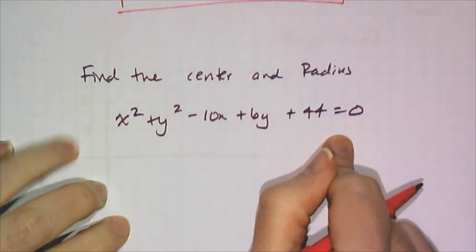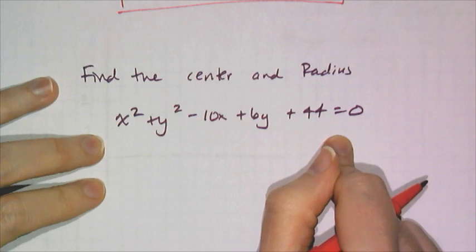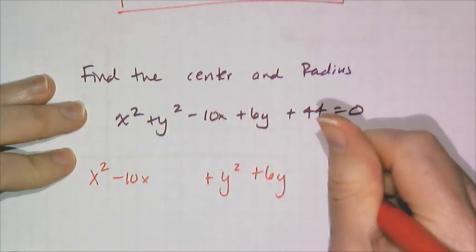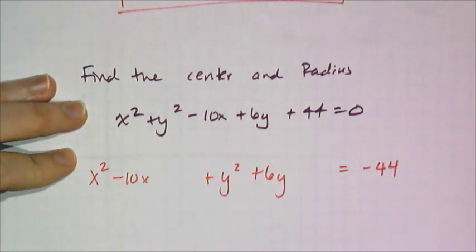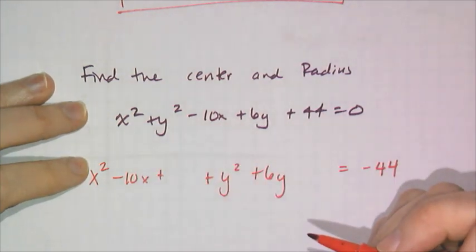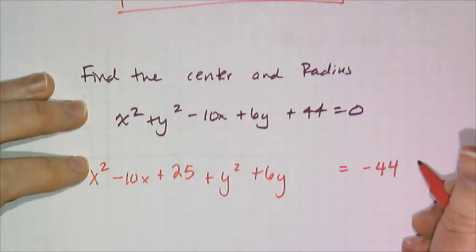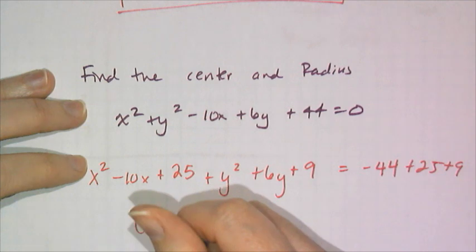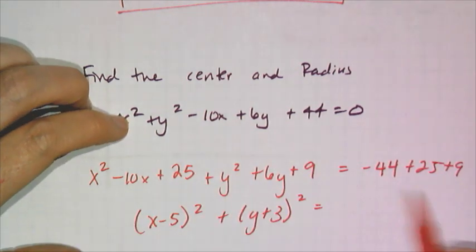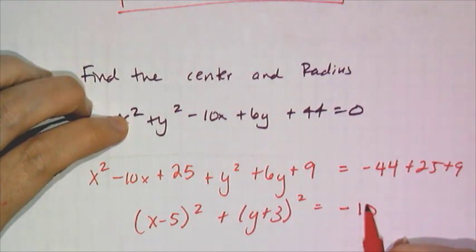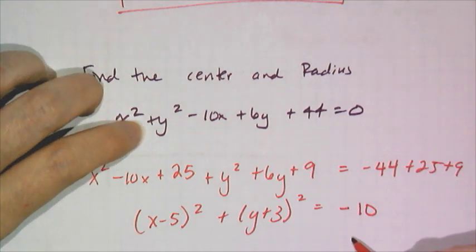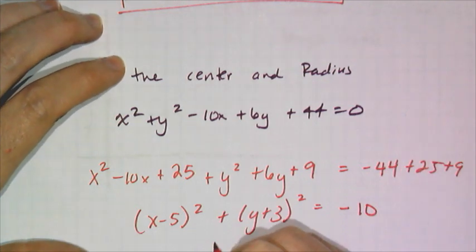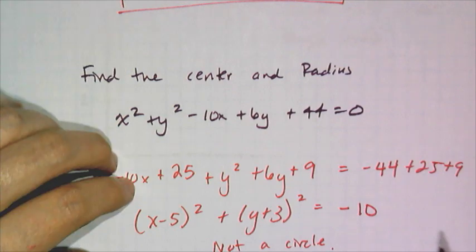Now we're going to do the special case example. Same thing happens as I did with the last example. I have to complete the square twice. I'm going to rearrange my terms and leave some space so I can complete the square twice. Half of -10 is -5 squared which is 25, add to both sides. Half of 6 is 3 squared is 9, add 9 to both sides. I can write this in factored form. Something special happens here. I get -10. The radius is a distance and distances cannot be negative. What I gave you to begin with was never a circle. This is actually not a circle.